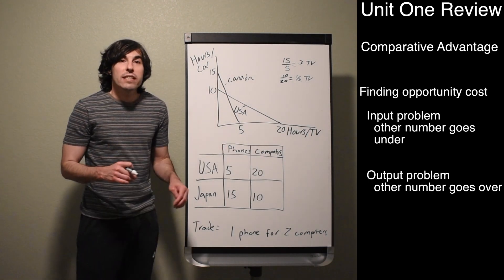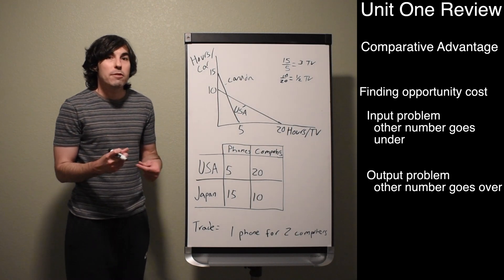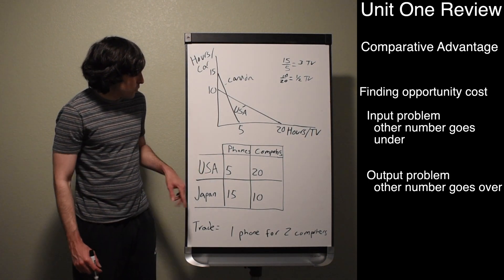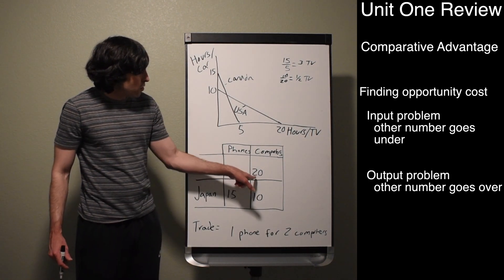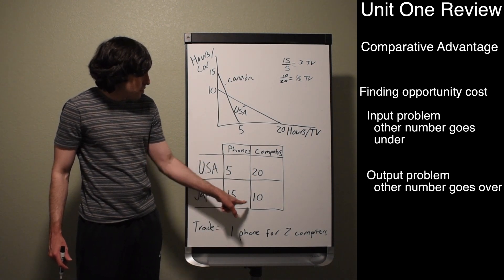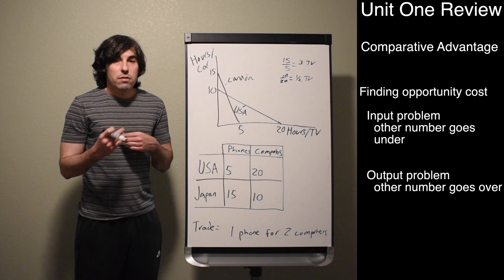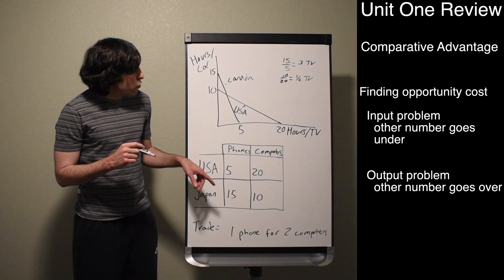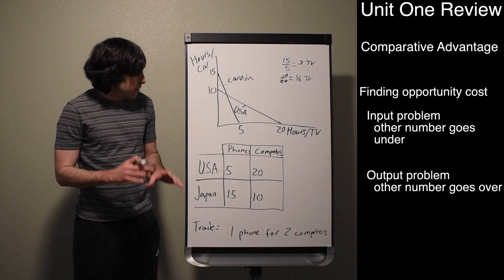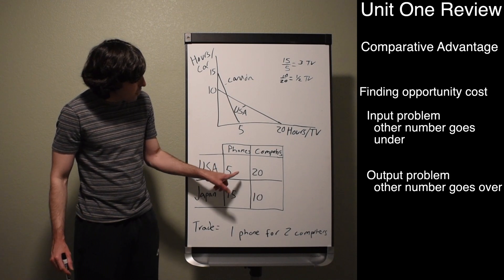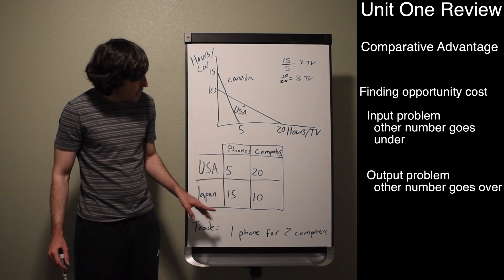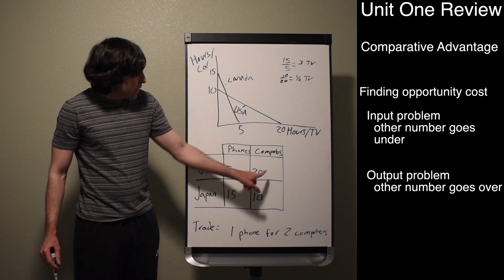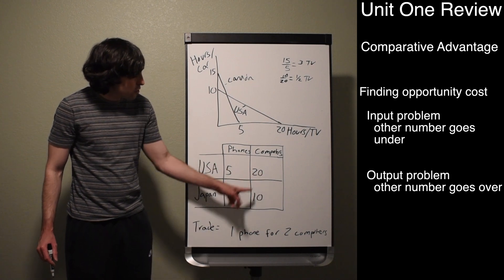Now let's look at an output problem. Here we're given two countries with the same amount of resources and looking at how much they can make in one day. The United States can make 5 phones or 20 computers; Japan can make 15 phones or 10 computers. For absolute advantage in an output problem, you look for the country that can make the most. Japan can make 15 phones versus the US's 5, so Japan has the absolute advantage in phones. The US has the absolute advantage in computers since 20 is greater than 10.